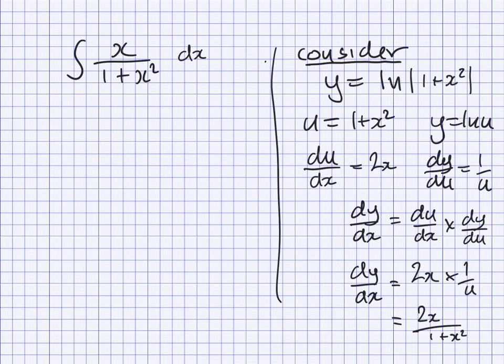So we can see that the right-hand side of our original equation will equal a half of ln 1 plus x squared.